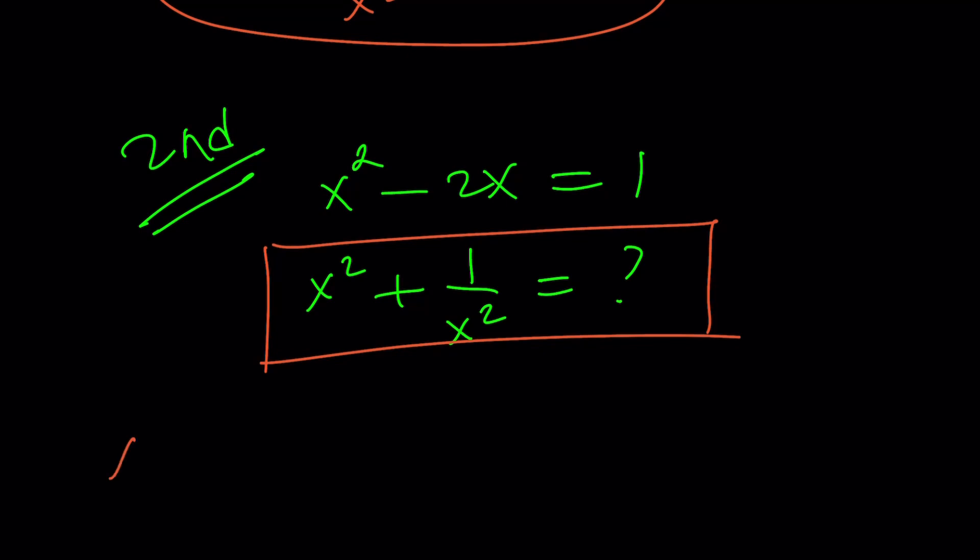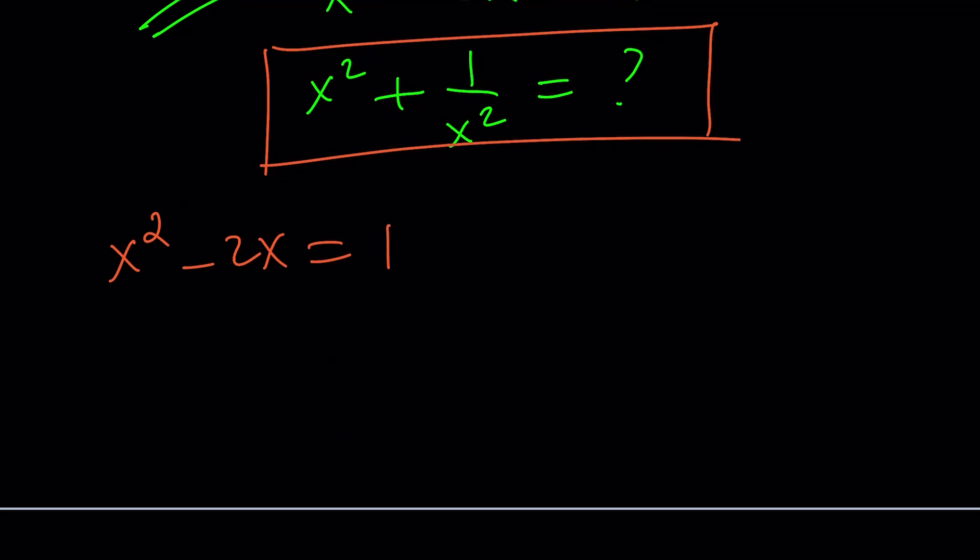I'm going to manipulate this a little bit. Let's go ahead and subtract 1 from both sides and add 2x. In other words, switch these around. And then divide both sides by x.